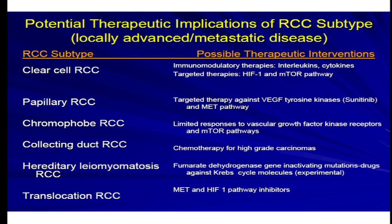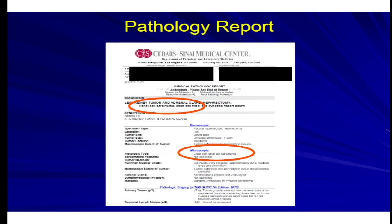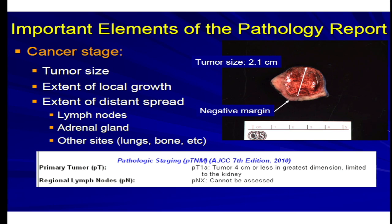It's very important for the pathologist to specifically subclassify the type of renal cell carcinoma. On any standard pathology report, you're going to see the diagnosis — renal cell carcinoma — and then the subtype somewhere buried in the report: clear cell type, papillary type, chromophobe type, or something like that. That's one important aspect of the diagnosis.